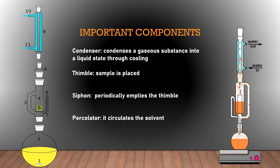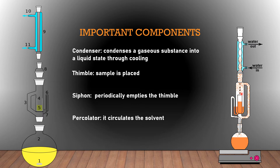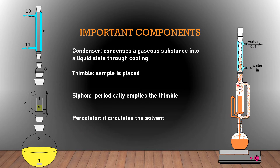Here are some of the important components of a Soxlet extractor. First, you have the condenser, which basically condenses a gaseous substance into a liquid state through cooling. Next, you have the thimble, where you place your sample or solid. Then you have the siphon, which periodically empties the thimble. One thing not yet mentioned is the percolator, which circulates the solvent.